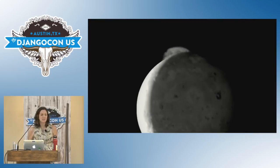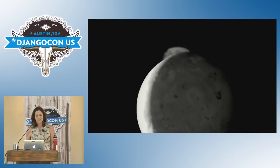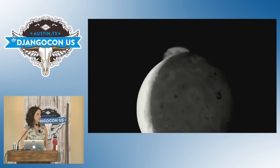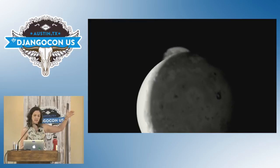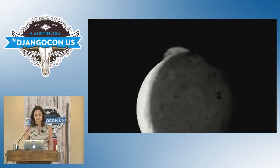That is a 200-mile-high plume. The volcano's name is Tvashtar. It's actually over the horizon a little bit, so you're just seeing the edge or the top of it.